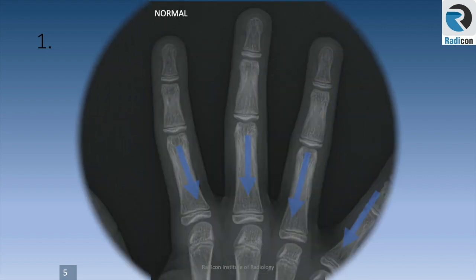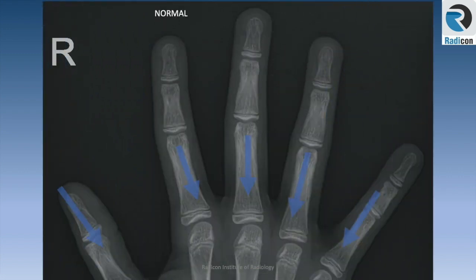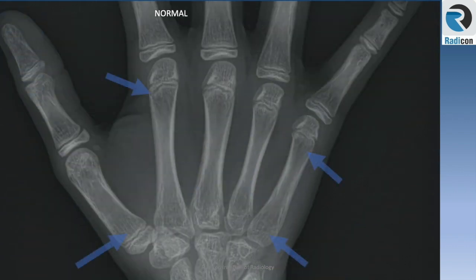Pay close attention to the bases of phalanges for subtle fractures. An exam favourite is the boxer's fracture at the neck of the first metacarpal and the fracture of the second metacarpal head. Do not forget to zoom up and check the bases of metacarpals, especially the thumb and little finger.